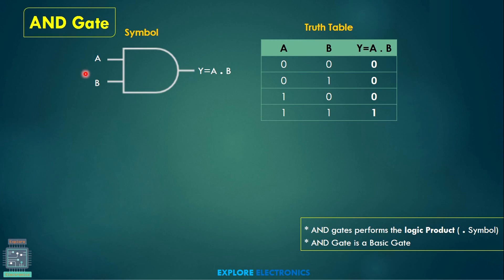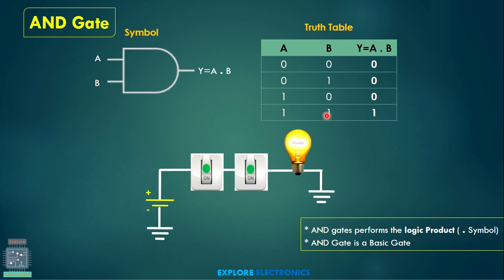The AND gate is a gate having two inputs and is also called a basic gate. The two inputs are A and B, and the AND gate performs the function A dot B. Because of the two inputs, the truth table has four different combinations. For inputs 0-0, 0-1, and 1-0 the AND gate output is 0. The AND gate produces output 1 only when both inputs are 1. In the switch diagram, the two switches are connected in series — both switches must be turned on to complete the circuit and turn on the bulb.